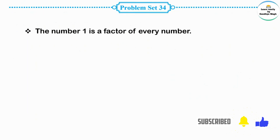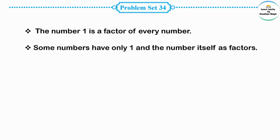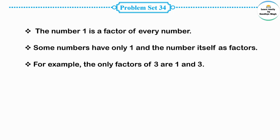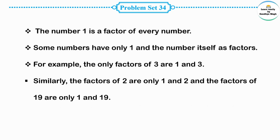In Problem Set 32 we learned how to find factors of any number. The number 1 is a factor of every number. Some numbers have only 1 and the number itself as factors — only 2 factors. For example, the only factors of 3 are 1 and 3. Similarly, the factors of 2 are only 1 and 2, and the factors of 19 are only 1 and 19.